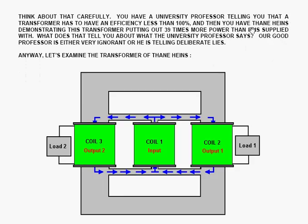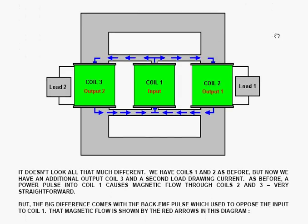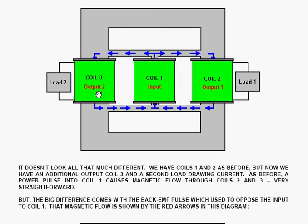Think about that carefully. You have a university professor telling you that a transformer has to have an efficiency less than 100%, and then you have Thane Hines demonstrating his transformer putting out 3,900%, 39 times more power than it's supplied with. What does that tell you about what the university professor says? A good professor is either very ignorant or he's telling deliberate lies. Anyway, let's examine the transformer of Thane Hines. It doesn't look all that much different. We have coils 1 and 2 as before, but now we have an additional output coil 3.